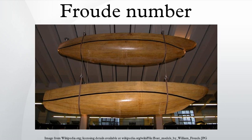The Froude number is used to compare the wave-making resistance between bodies of various sizes and shapes. In free surface flow, the nature of the flow depends upon whether the Froude number is greater than or less than unity. You can easily see the line of critical flow in your kitchen or bathroom sink — leave it unplugged and let the faucet run.